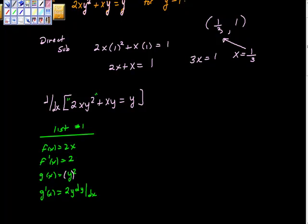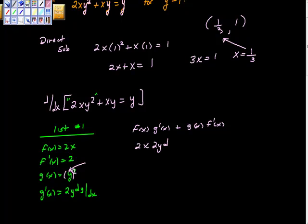I'll show how I got g'(x). I differentiated the outside: brought the 2 down, two times one gives this 2, then decremented the exponent by one to get y to the first power. Then I took the derivative of the inside, and the derivative of y is dy/dx. So now I'm going to build this product rule. The product rule says f(x)·g'(x) plus g(x)·f'(x). Taking those pieces: 2x times 2y·(dy/dx), plus y² times 2.